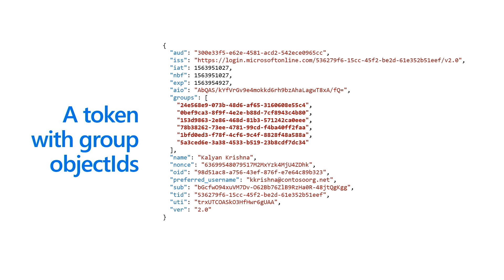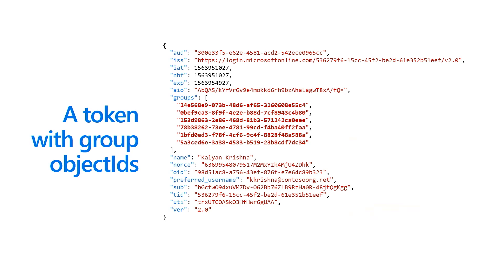This is what shows up in your token — a 'groups' claim with a bunch of group IDs. The group IDs are typically unique for your tenant only, so you have to hard-code those group IDs inside your application, or give the administrator some kind of UI where they can specify which group IDs they care about and tie certain actions to those group memberships. It might be a bit more work.